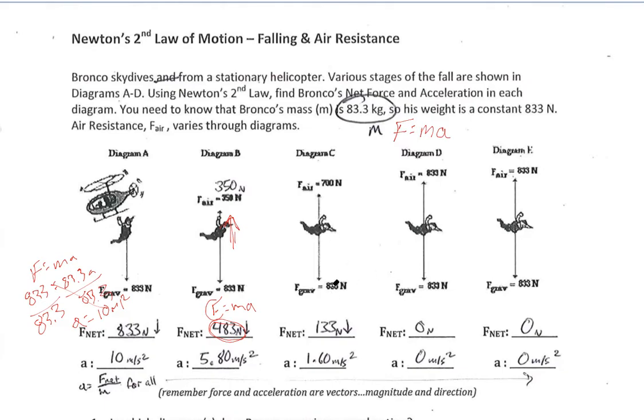And we would do the same thing throughout the rest of this problem. Figure out what our net force is down, 833 minus 700 gives me 133. Plug it into F equals mA, end up with 1.6 here. Do the same thing with D. In this case, 833 down. It's canceled out by 833 up, so I have no net force acting on my guy here, on Bronco.